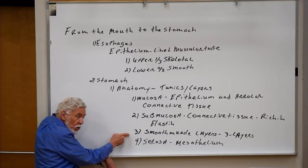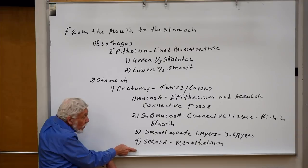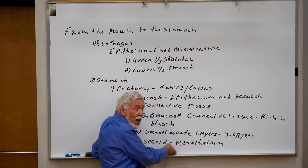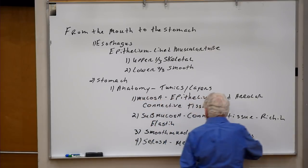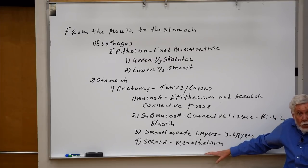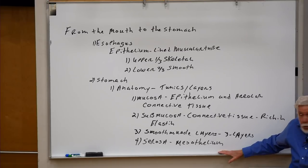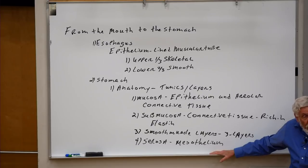Attached to the smooth muscle layers is the serosa, which is simply a mesothelium — a continuous layer of mesothelial cells. The mesothelial cells look like an epithelium but aren't defined as one because they're not continuous to the outside world. This mesothelial layer is attached to the stomach and is continuous with other mesothelial structures that form the peritoneum.